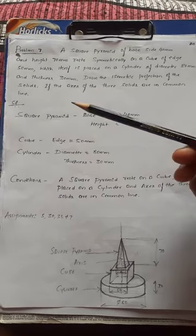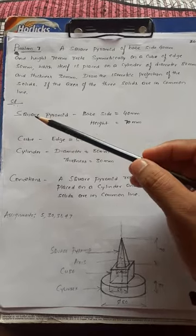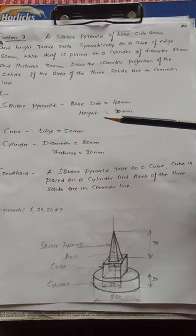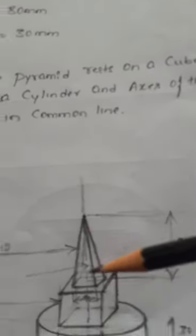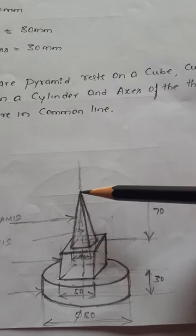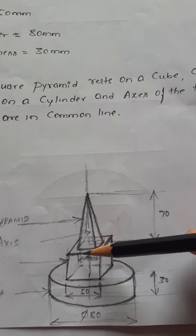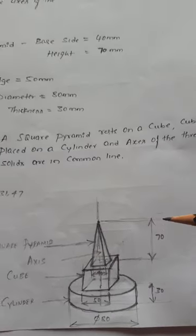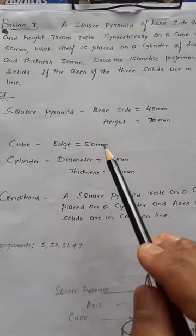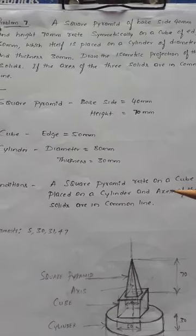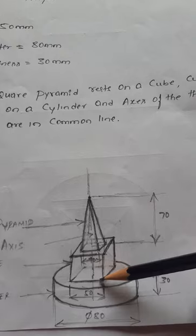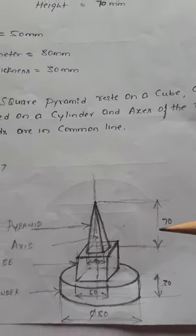Up to the previous problem we solved only two solids — a combination of two solids. Now here three solids are given. The first solid is a square pyramid of base side 40 mm and height 70 mm. The base of the square pyramid is square-shaped with an apex. The second solid is a cube of edge 50 mm — all sides are equal in length: length 50 mm, width 50 mm.